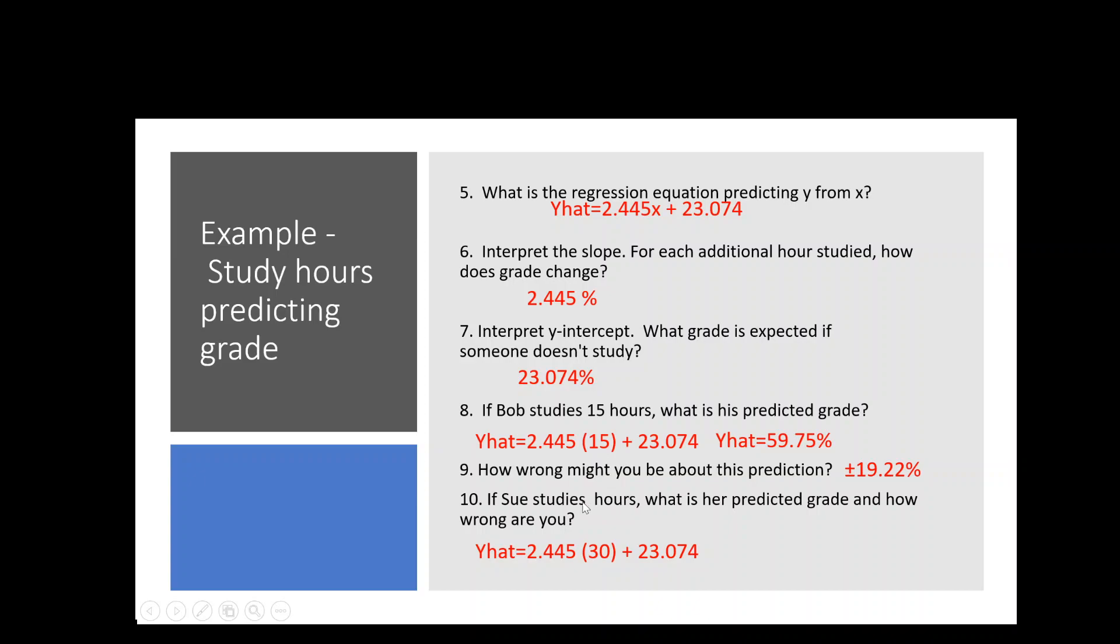Now let's say that Sue, this is missing the 30, I apologize. Let's say Sue studies 30 hours. What is her predicted grade? So we're just going to do the same thing we did with Bob with Sue. So we plug 30 into the equation, just like we did Bob's 15. And then we would calculate her score, if we do that math, to be 96.42%. But we tend to be wrong about 19.22%, so give or take 19.22%. Now sometimes students get worried because they think, uh-oh, this is over 100%. And we recognize that. This is statistics. We're okay with that. We're just trying to say that on average, we are wrong about 19.22%.